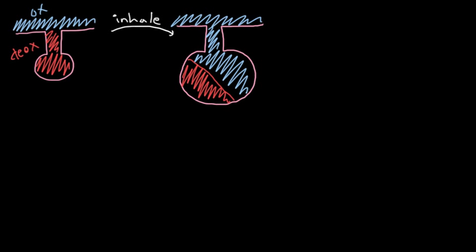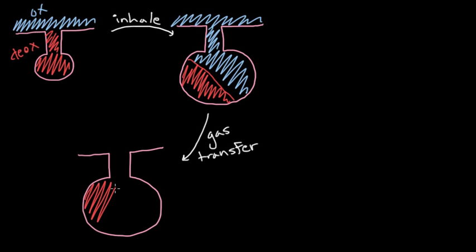So now that your alveoli have this fresh, oxygenated air in them, they're going to take the oxygen and put it into the blood. And so that nice, fresh air is going to become deoxygenated. So that's the next step. And we'll draw it. We'll call it gas transfer because your alveoli are transferring the oxygen to your blood. And the size of the alveoli doesn't change. All that's going to change is that now you're going to have all the air in your alveoli being deoxygenated.